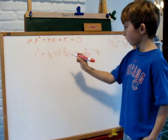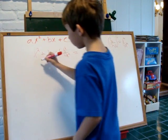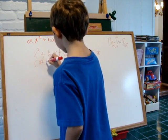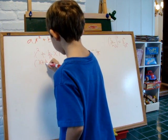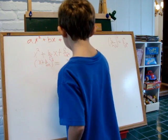This side of the equation factors into a perfect square. When we factor it we get x plus b over 2a, squared, equals...